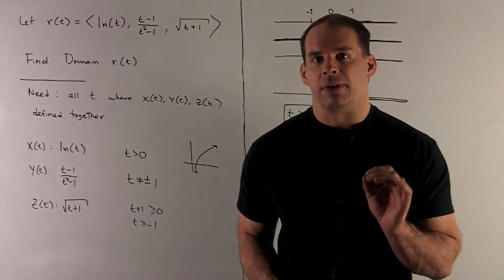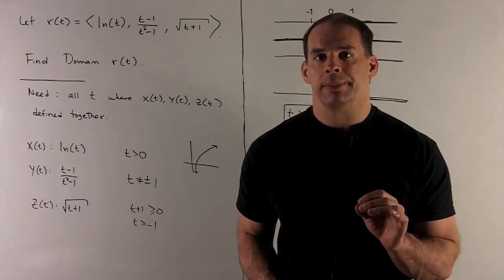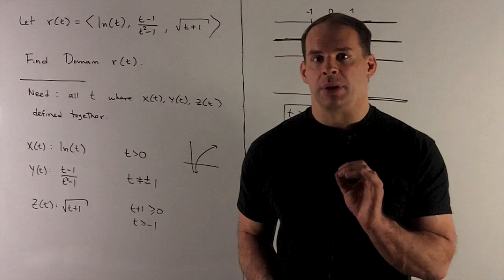Find the domain of the vector-valued function r(t) equal to natural log t, t minus 1 over t squared minus 1, square root of t plus 1.